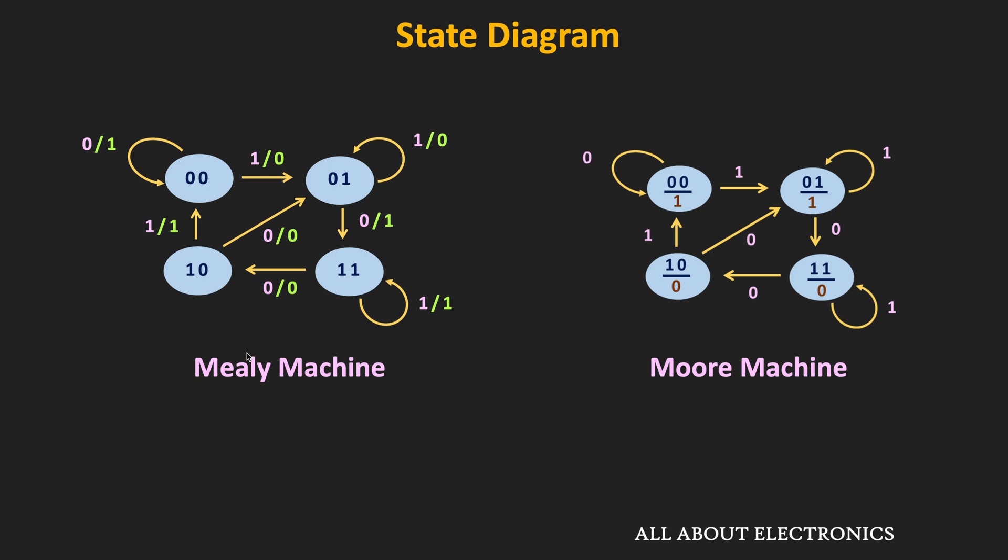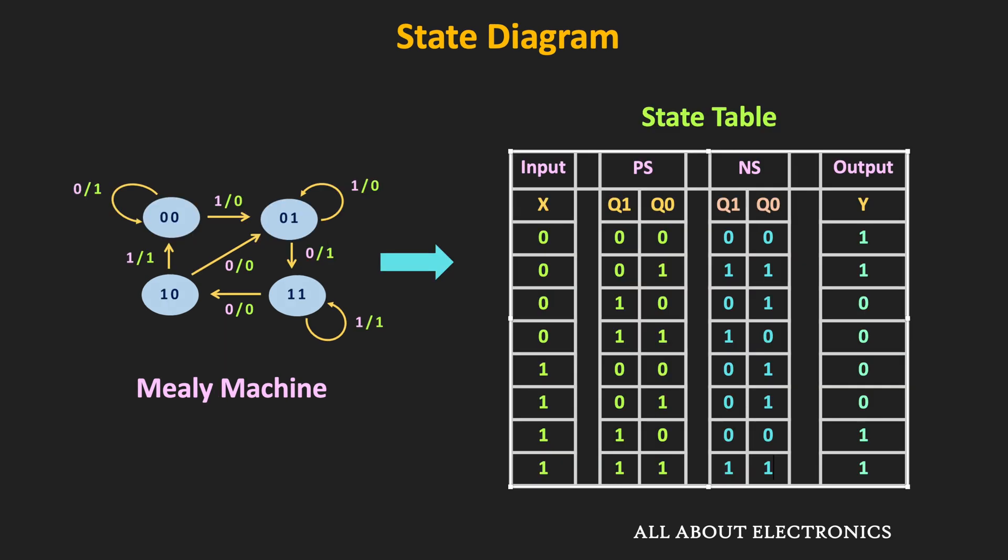Once we draw a state diagram, the second step is to draw a state table. Then after following the subsequent design steps, we can design any sequential circuit. During the design procedure in the state diagram, sometimes we have redundant states. By removing the redundant states, we can reduce the number of states in the state diagram. By doing so, effectively we can reduce the required number of flip-flops and logic gates in the circuit.